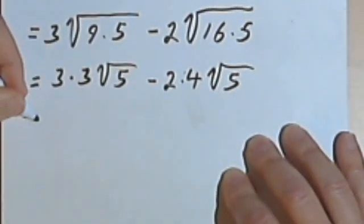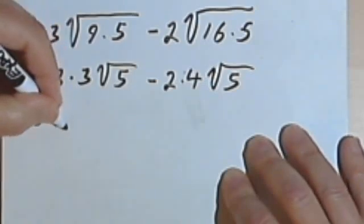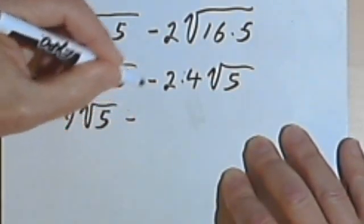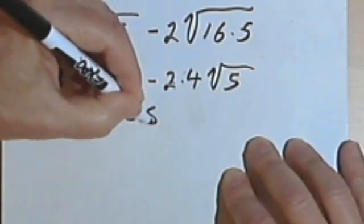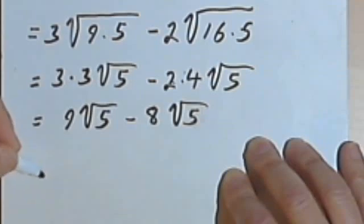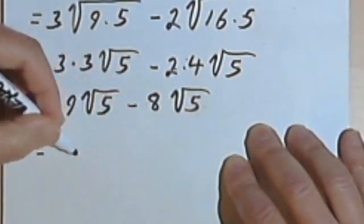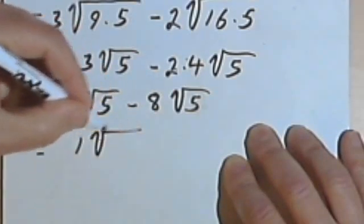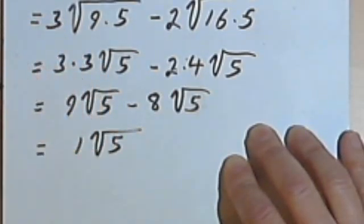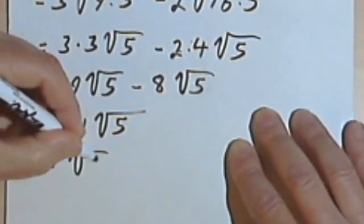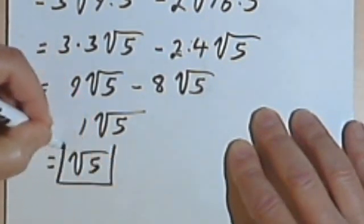I'll do the multiplication for each of these. So 3 times 3 is 9, times the square root of 5, minus 2 times 4 is 8, times the square root of 5. And now it's just a matter of 9 minus 8 is 1, times the square root of 5. And of course I don't really need that 1, so I can just rewrite this as the square root of 5.